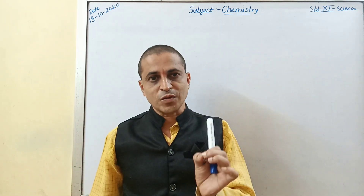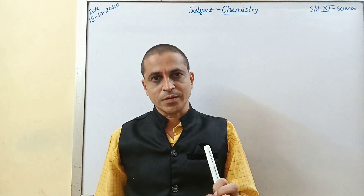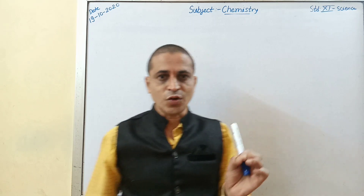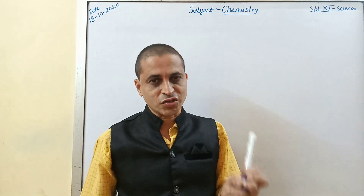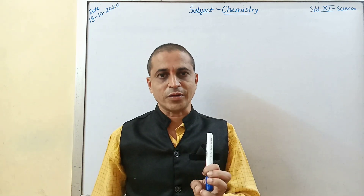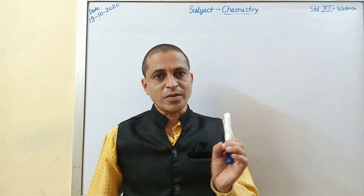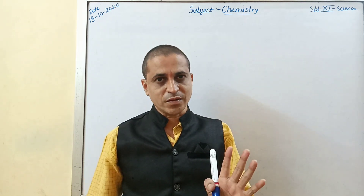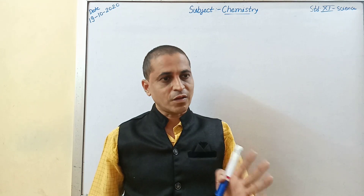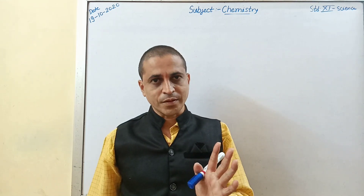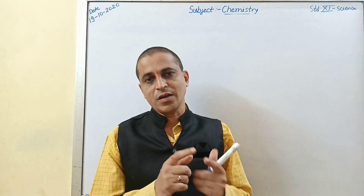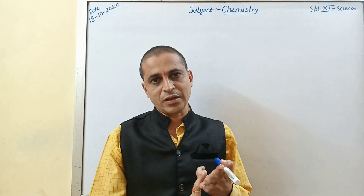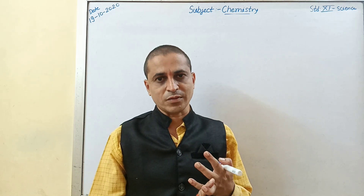First you must know the meaning of chemistry. Chemistry is the branch of science which deals with the study of composition, structure and properties of matter. Chemistry is divided into four different branches, also given in your textbook: first is physical chemistry, second analytical chemistry, third inorganic chemistry, and fourth organic chemistry.